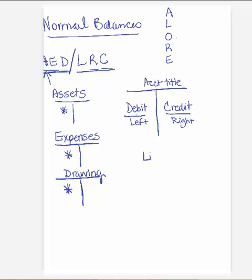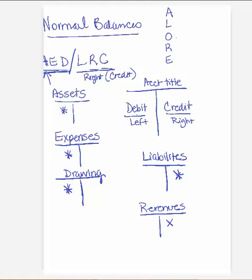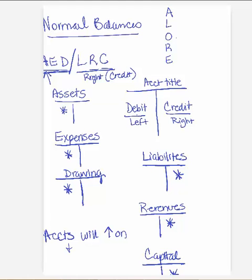L stands for liabilities, and liabilities all have a credit balance — you see here it's on the right side, or the credit side of the sentence. R stands for revenues — revenues have a normal credit balance. And C stands for capital — the capital account also has a normal credit balance. The accounts will increase on the normal side, so you need to memorize that before we move on.